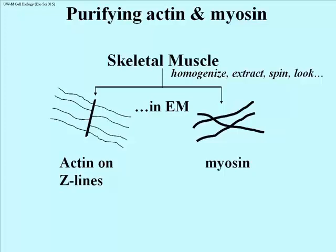What you find are two fractions: one containing actin on Z-lines, and the other containing thick filaments — in fact, of the thickness predicted for myosin. So we have separated actin and myosin, although the actin is still associated with those Z-lines.